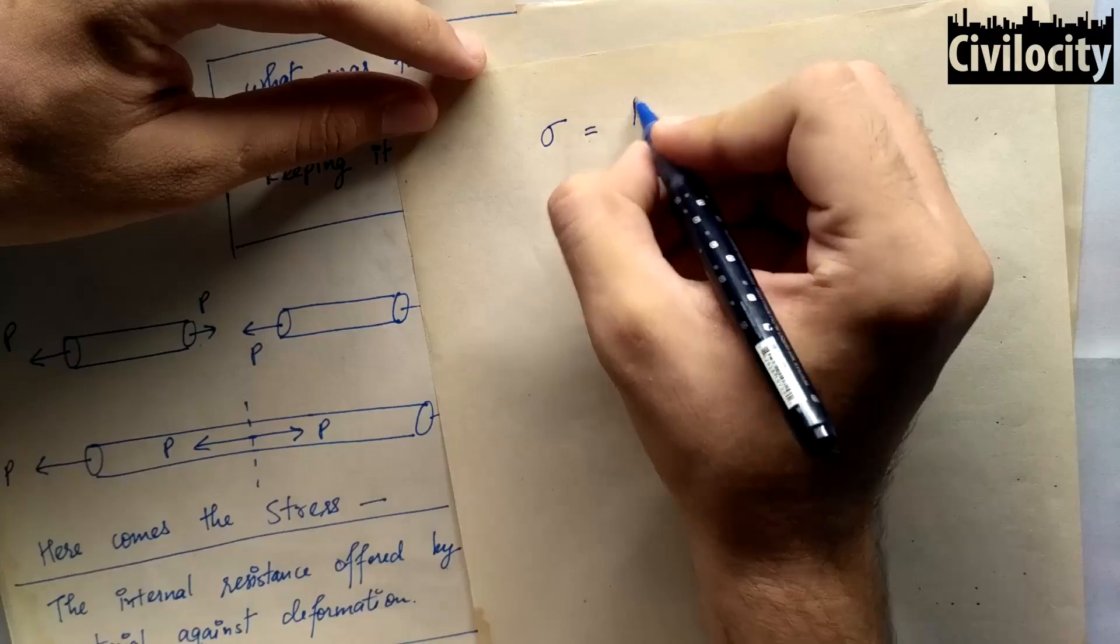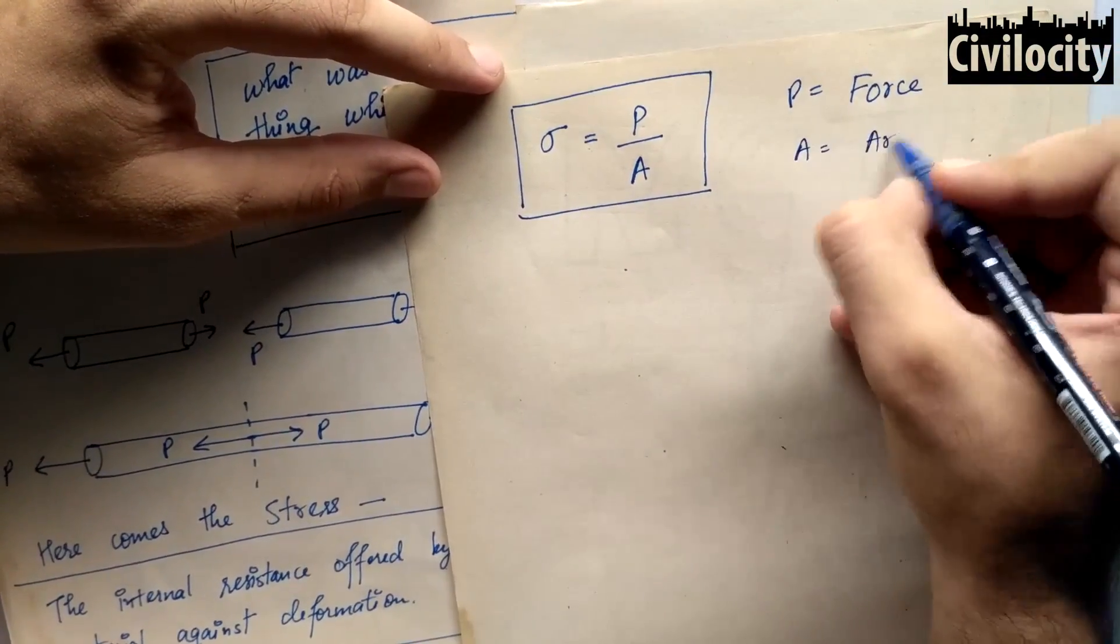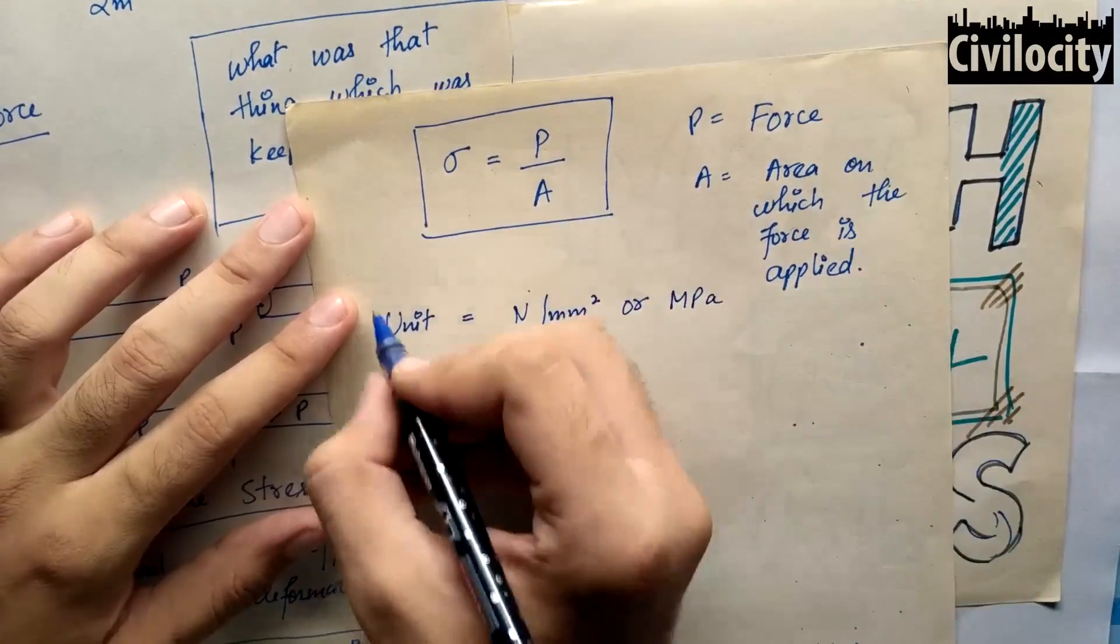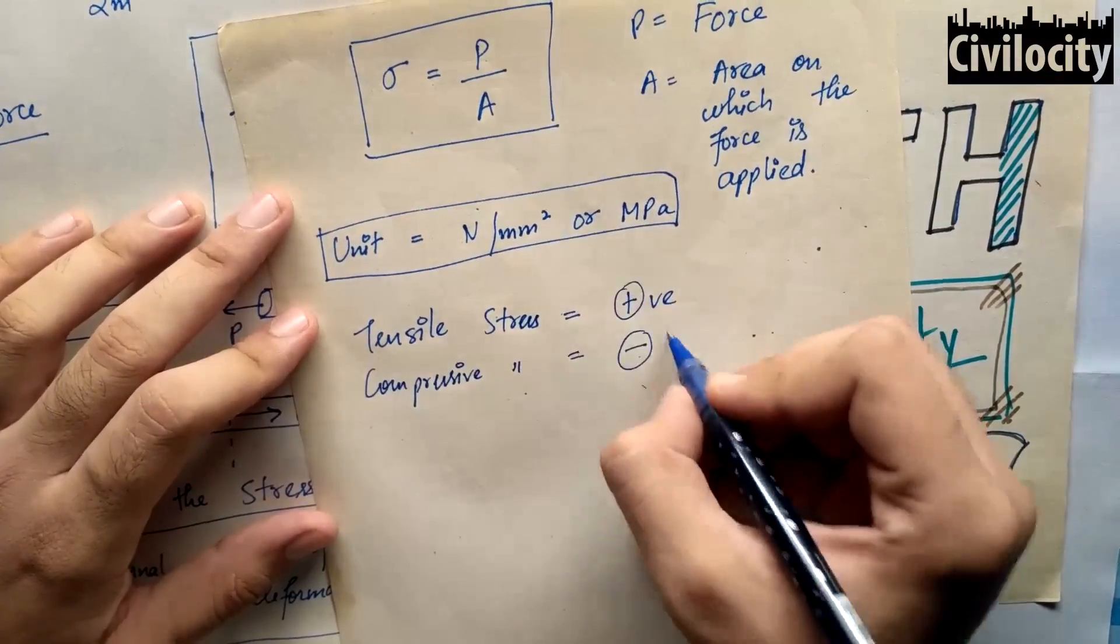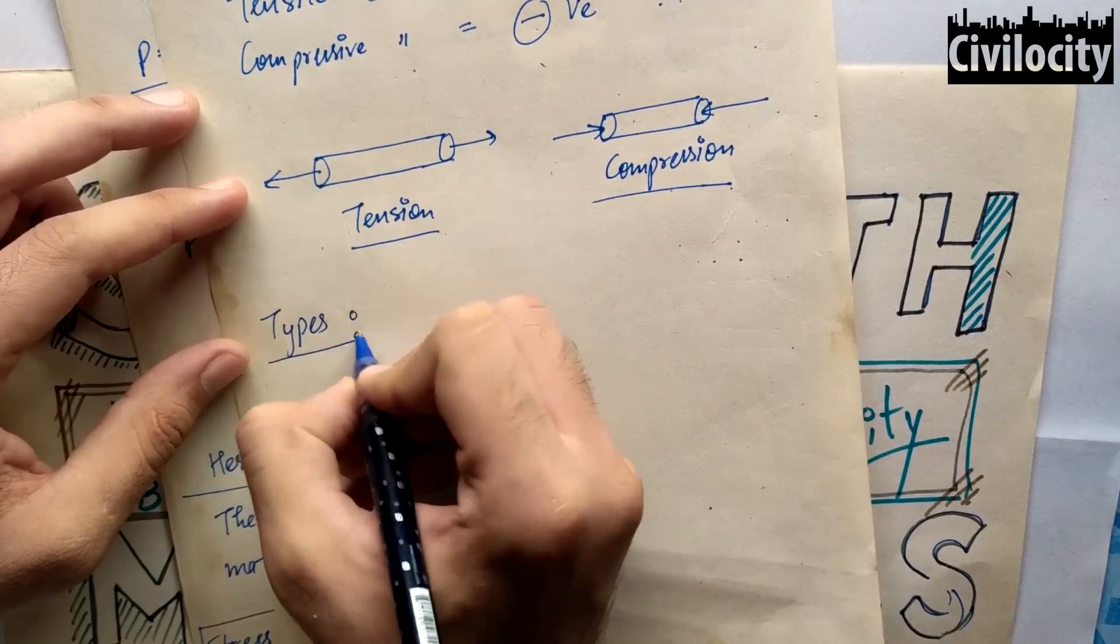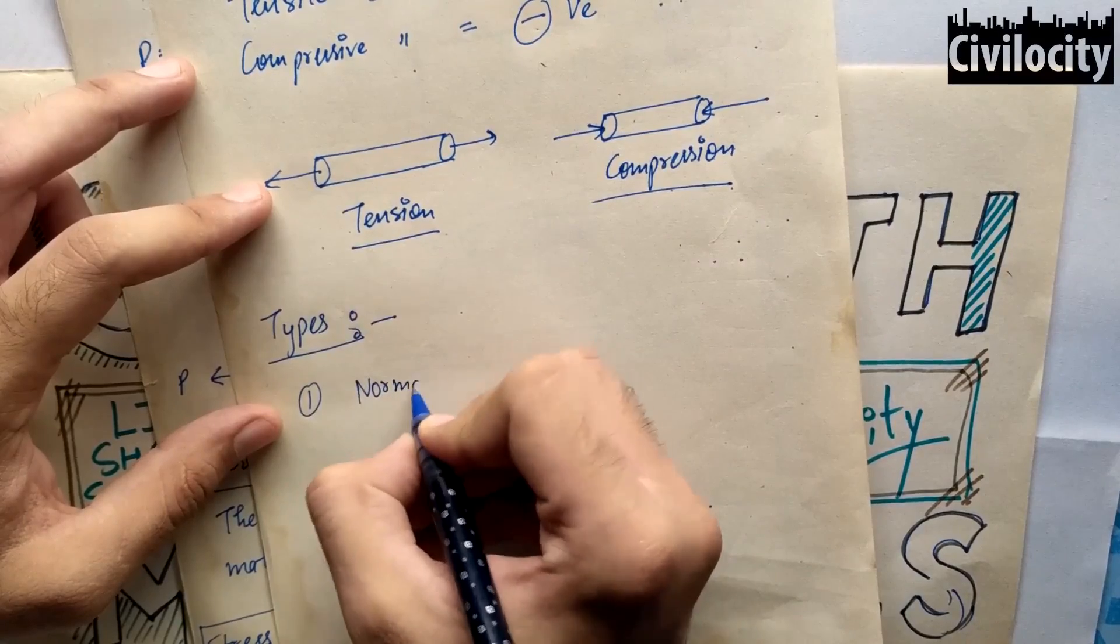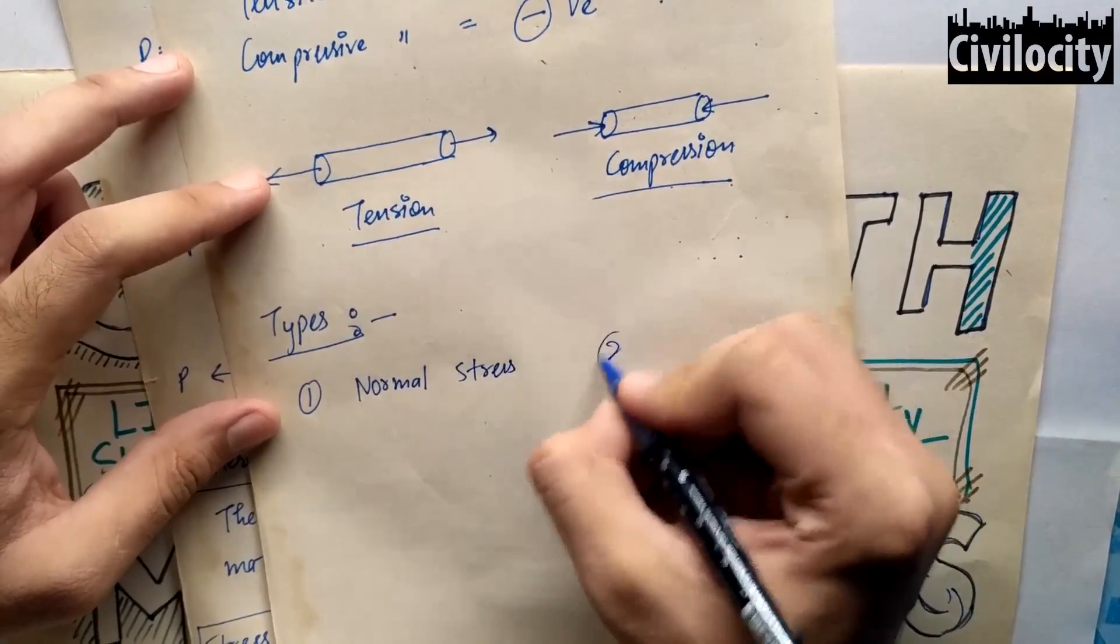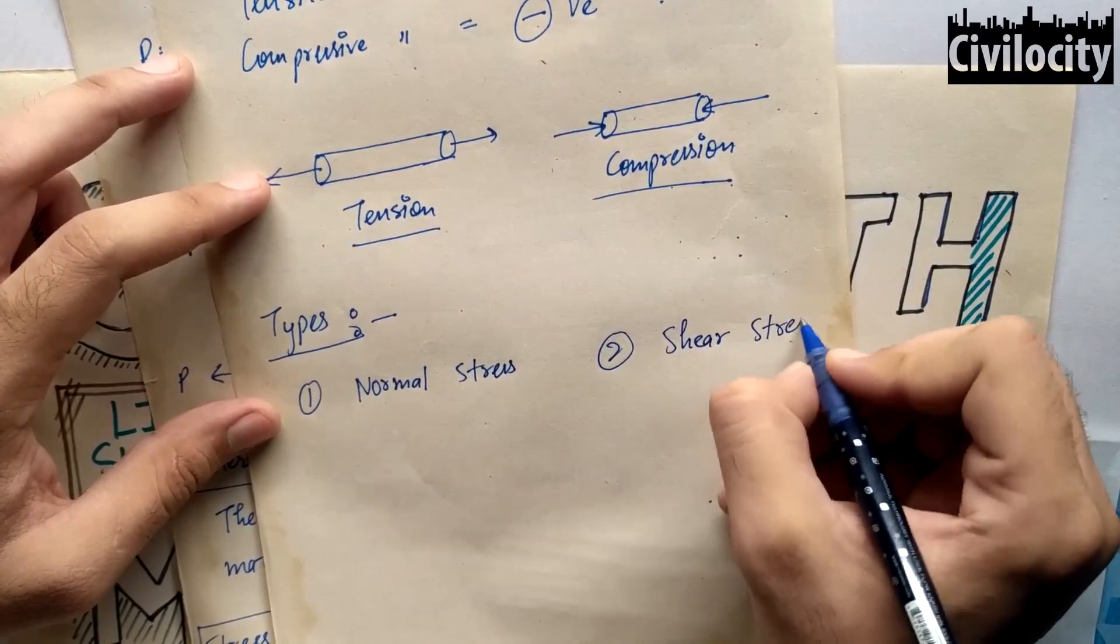Stress is equal to load divided by area, that is force applied on a body divided by the area of cross-section. Its unit is normally newton per mm squared or megapascal. Tensile stress is usually positive, and compressive stresses are negative. Depending upon nature of stress, stress can be of two types: normal stress and shear stress.